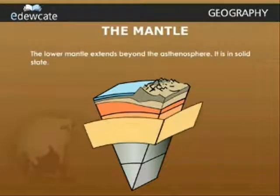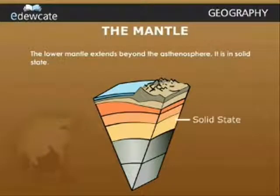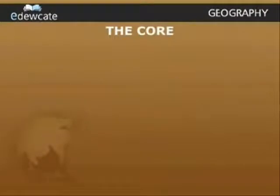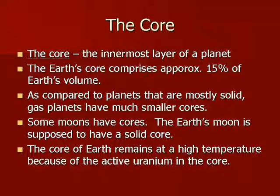The lower mantle extends beyond the asthenosphere and is in a solid state. The final layer of the Earth is called the core, most commonly the innermost layer of any planet. The Earth's core comprises approximately 15% of the total volume. Gas planets have much smaller cores compared to other mostly solid planets. Some moons were found to have cores as well — the Earth's moon is thought to have a solid core, just like the Earth.